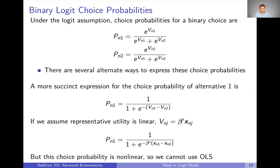So if we only have two alternatives — a binary choice — then the logit assumption gets us to choice probabilities that are even much simpler. Remember, in the logit choice probabilities, the denominator is summing over all alternatives the exponential of representative utilities. When we only have two alternatives, we only have two terms in the denominator. So the probability of alternative one is just exp(v1) divided by exp(v1) plus exp(v2), and similarly, the choice probability of alternative two has v2 in the numerator instead of v1.